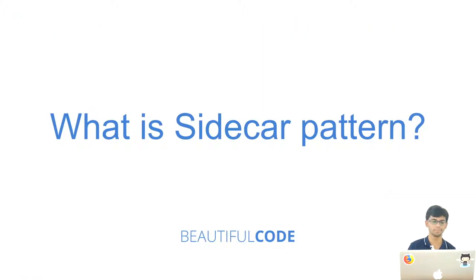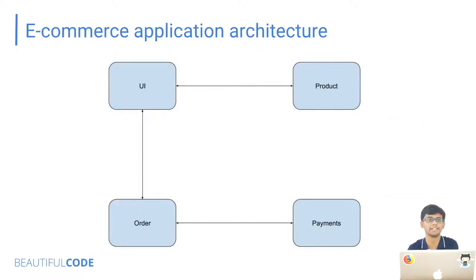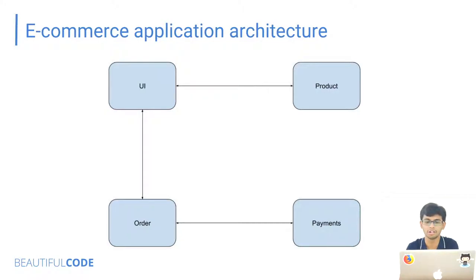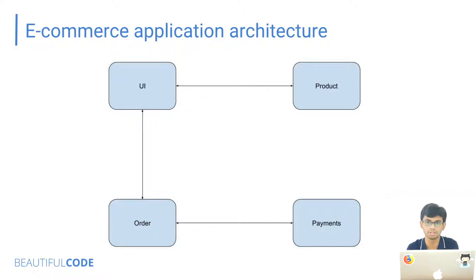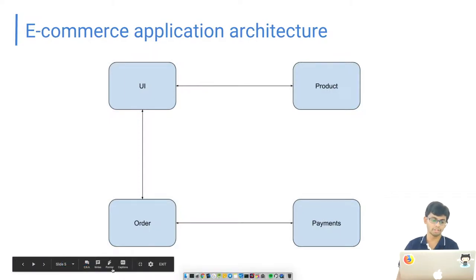Let's go into what a sidecar pattern is. Let's take an example of an e-commerce application. There are four services: a UI layer that talks to the product service to get a list of all products available to display to users. When a user places an order, it talks to the order service to create an order. The order service then talks to the payment service to process the payment.